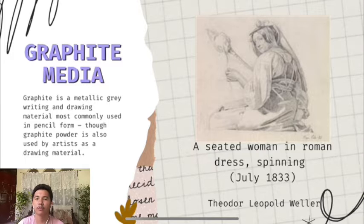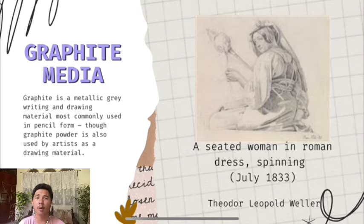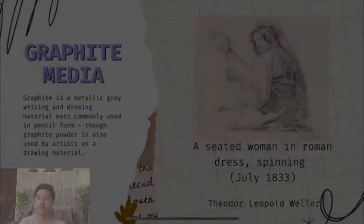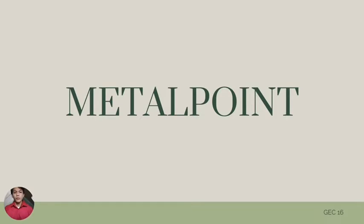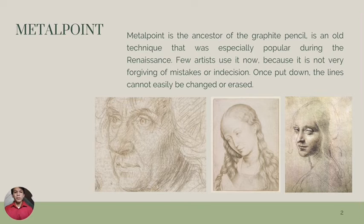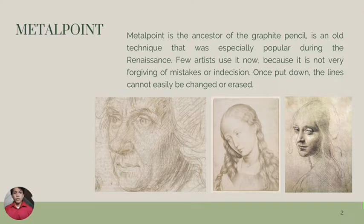One example of graphite media is the artwork of Theodore Leopold Weller, a seated woman in Roman dress spinning, created in July 1833. Metal point is the ancestor of the graphite pencil, an old technique that was especially popular during the Renaissance period. Few artists use it now because it is not very forgiving of mistakes or indecision — once put down, the lines cannot be easily changed or erased.